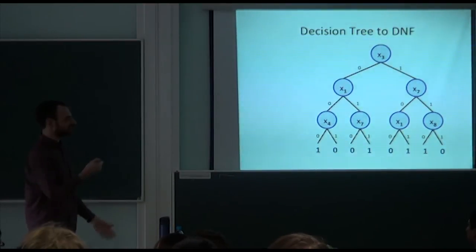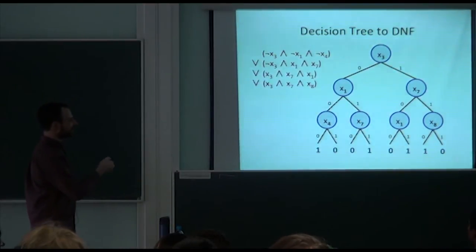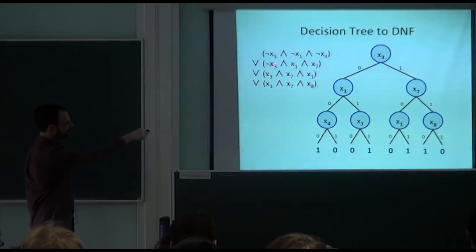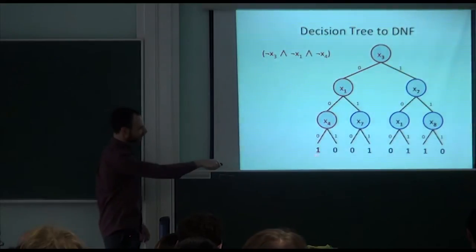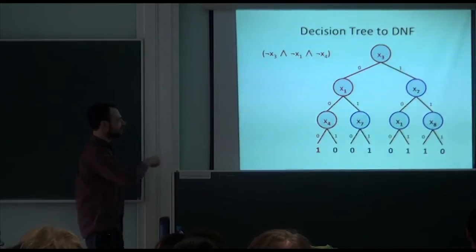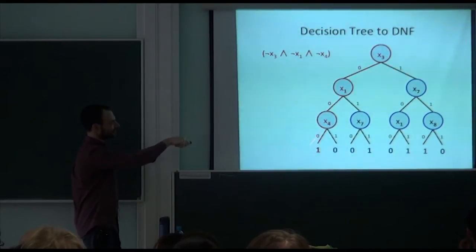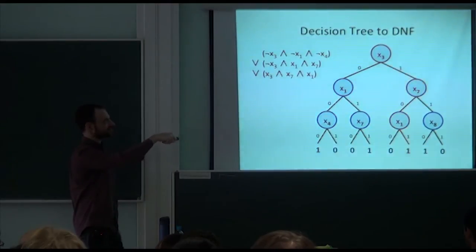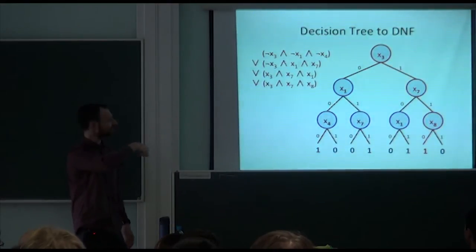There is a relationship between decision trees and DNF/CNF formulas. Every depth-k decision tree can be converted to both a k-DNF and a k-CNF. You look at all the 1-output branches in the decision tree and take a conjunction of the corresponding clauses.